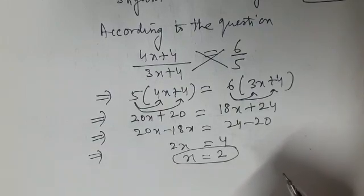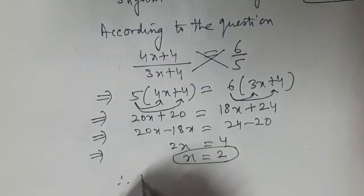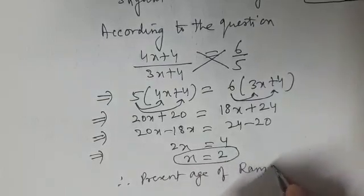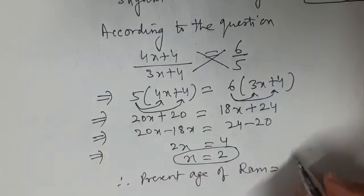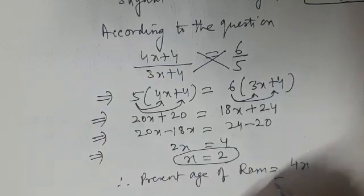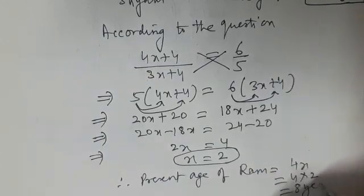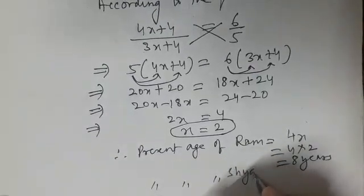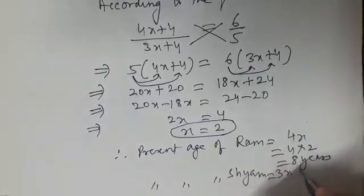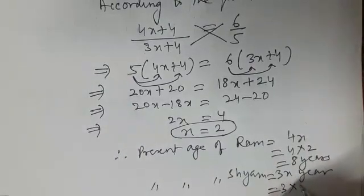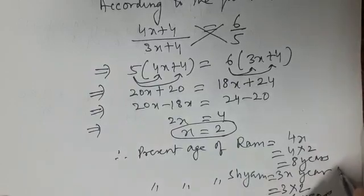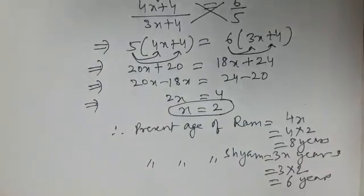Therefore, present age of Ram will be 4x years, which is equal to 4 into 2, that is 8 years. And present age of Sham will be 3x years, that is 3 into 2, which gives us 6 years. This is the answer we get.